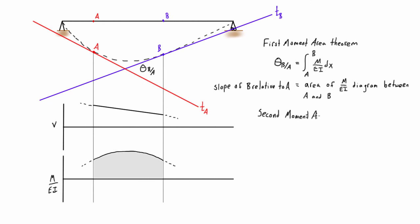Now this second moment area theorem gives us the expression for this value here that's called the tangential deviation. So T B with respect to A, or B relative to A, is this value here. So we say T B relative to A. So the actual vertical separation of these two tangent lines at point B is equal to this X bar, basically which is the centroid of our M over EI area from A to B, and that is the distance basically to B here, so we call this X bar.